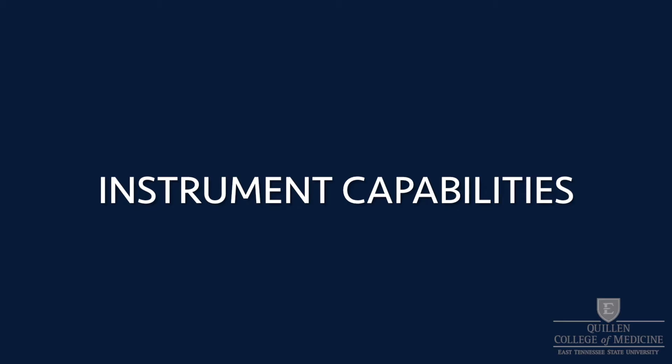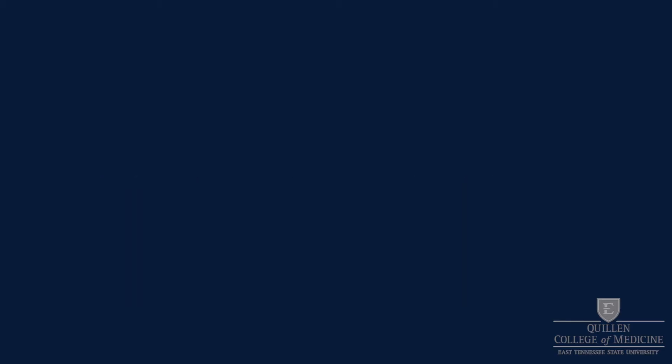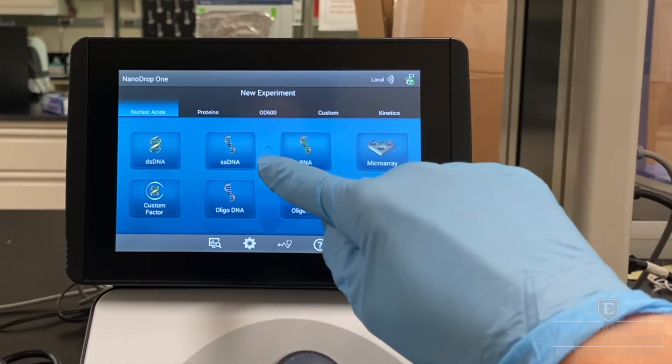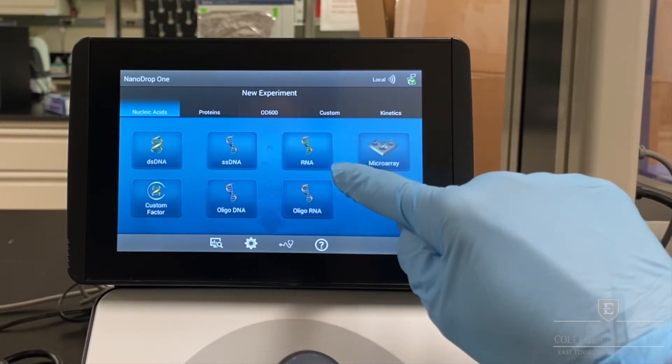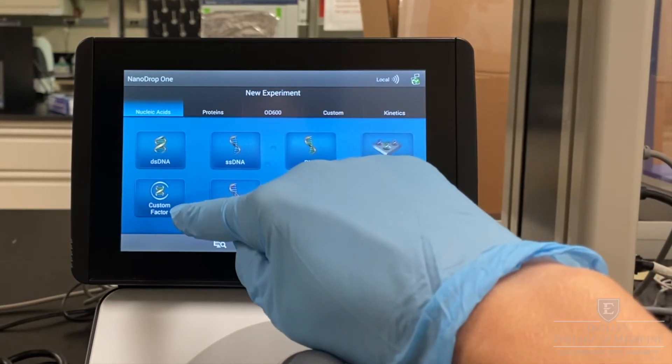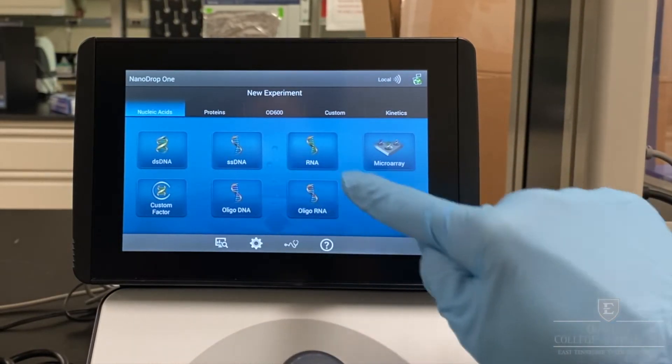The NanoDrop 1 can quantify many sample types: double-stranded DNA, single-stranded DNA, RNA, micro-array with two fluorophores, custom factors, oligo-DNA, or oligo-RNA.